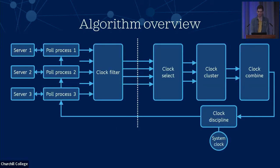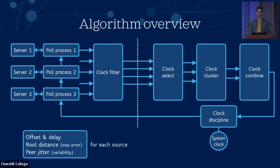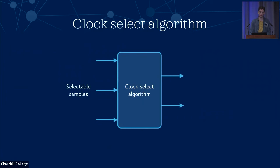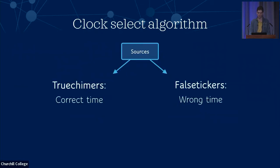That's the first stage of the algorithm done. We've taken samples over time for each source, chosen the best sample for each, and selected which sources are good enough to use. For each source we've calculated the offset and delay, the root distance as a measure of maximum error, and the peer jitter as a measure of variability. The next stage is the clock select algorithm, which takes the set of selectable samples and filters out any samples that are giving us the wrong time — calling true chimers the servers with the correct time and false tickers those with the wrong time, whether inaccurately synchronized or actively malicious.